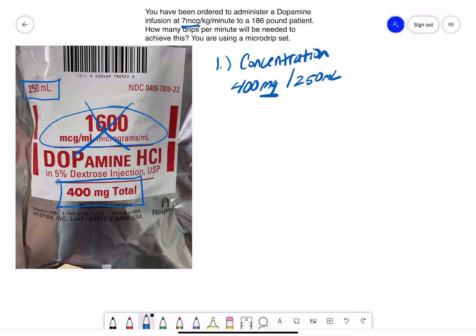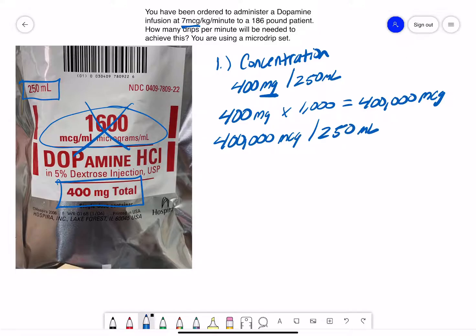So we need to convert milligrams to micrograms. To do that, we multiply by 1,000. 400 milligrams multiplied by 1,000 is 400,000 micrograms.